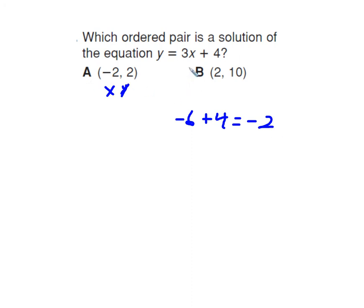Well, let's try the other one. The X is 10. 30 plus 4 is not 2. Okay. So in this case, it's A.